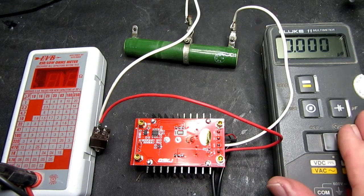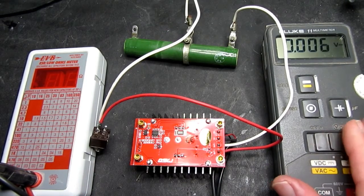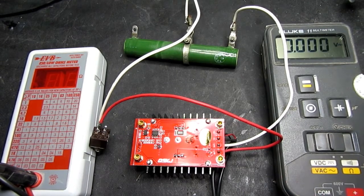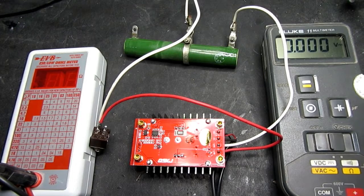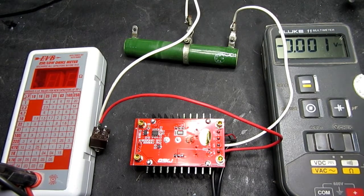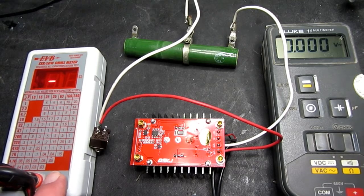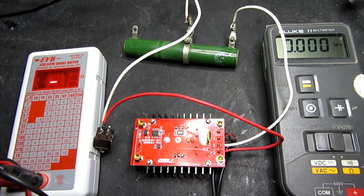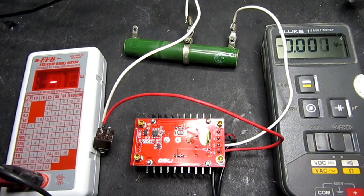But just measuring the capacitance doesn't always give us the full story. Especially here in the south of Spain, where the temperatures are normally very high. We need to check what's called the equivalent series resistance of the capacitor. It's normally the giveaway.